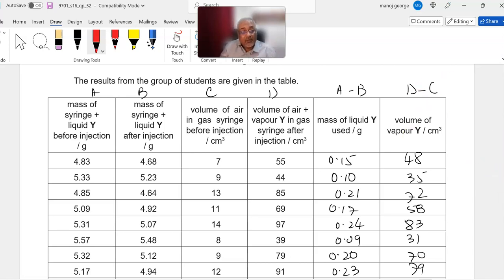To find the mass of the liquid, it's always recommended you give these column headings. These column headings make it easier for you and the teacher to understand what should be done. If you do A minus B, that's the mass of the liquid before and after injection, so the difference is the amount of liquid used. The amount of air would be D minus C, the volume after the sample is introduced.